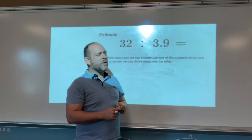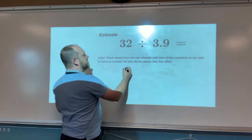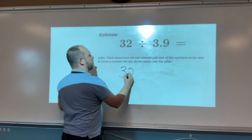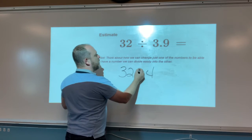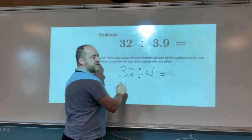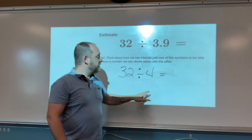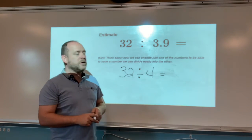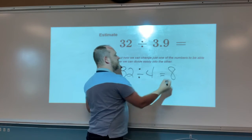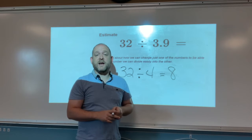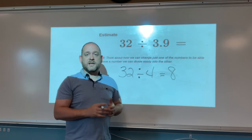If we round this up to 4, I have 32 divided by 4. Now if you know your multiples of 4 and your factors of 32, you know that this is a good match. This is compatible because 4 times 8 gives us 32. So 32 divided by 4 will give us 8.